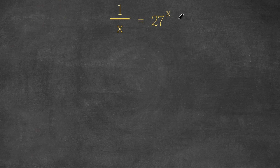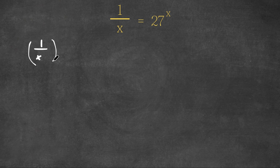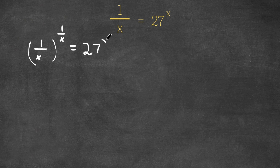What I'm first going to do is take the power of 1 over x on both sides. So now we have 1 over x to the power of 1 over x is equal to 27 to the power of x to the power of 1 over x.